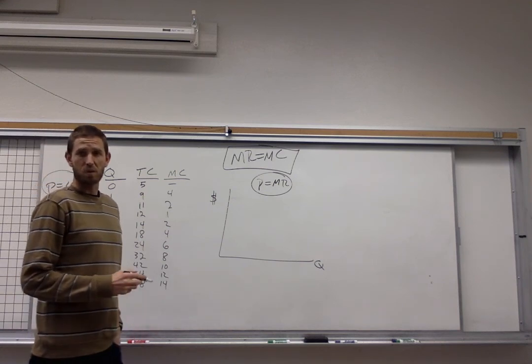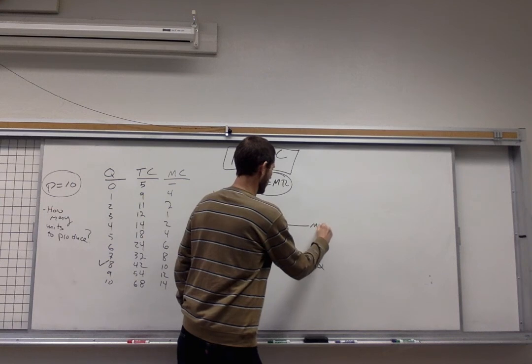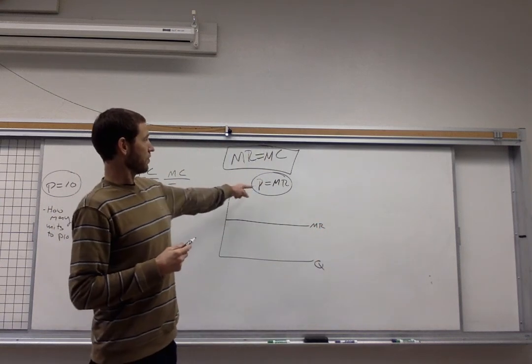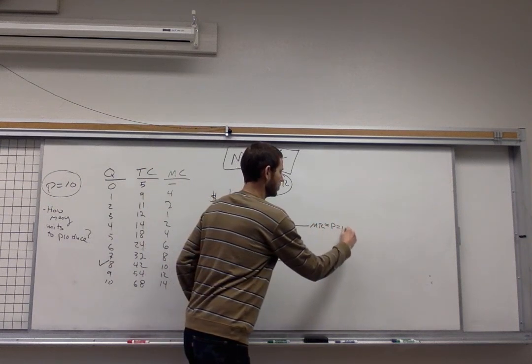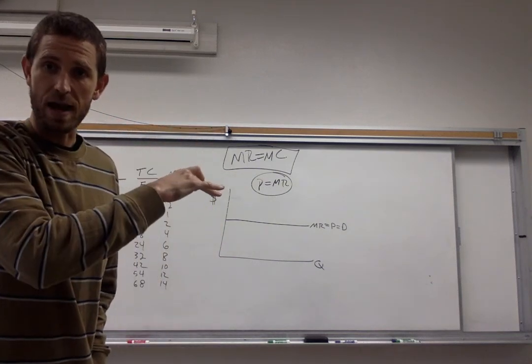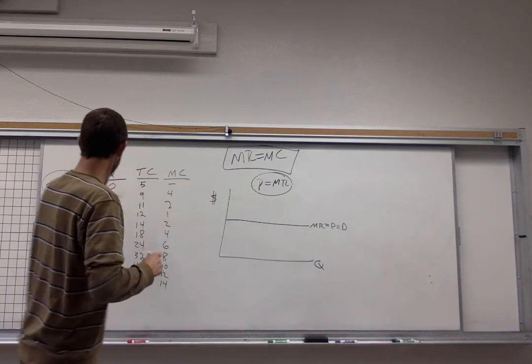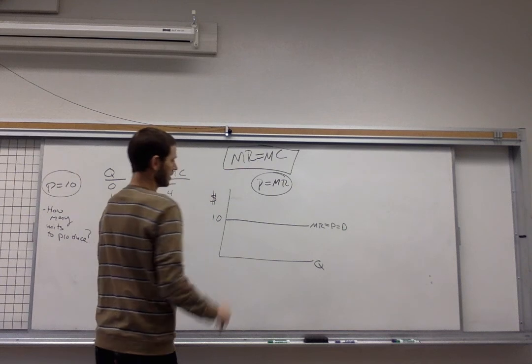First up I'm going to draw in the firm's marginal revenue curve. Marginal revenue is going to look like this and in perfect competition just like we were saying before that's also equal to their price and also equal to the demand curve that they're going to face. How high you want to put that curve is going to correspond with whatever price the firm is facing. So if we're saying they have a ten dollar price then that's where this demand curve is situated.